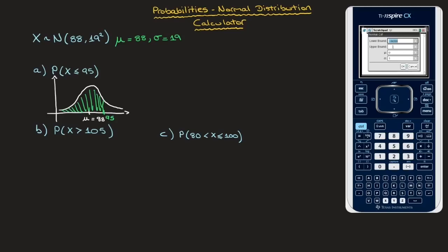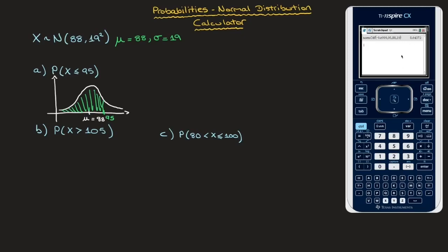We move on to the upper bound — that's the value of x at which our area stops. In this case, that's 95, so I type 95. Next, I need to enter the mean, which is 88, so I replace the 0 with 88. And next I need to enter the standard deviation, which is 19, so I enter 19. Once everything's entered, I click on OK. We've just calculated the area and it's equal to 0.64372.